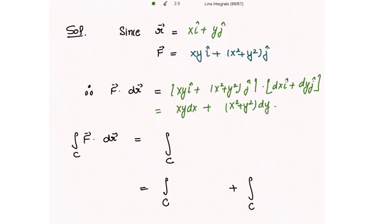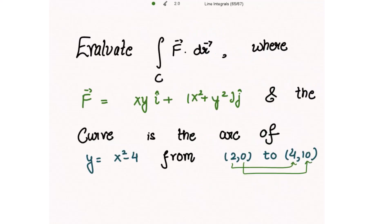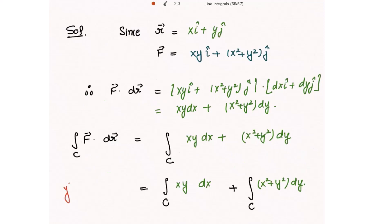The integral of F⃗·dr⃗ equals the integral of xy dx + (x²+y²) dy. We separate the integrals: the first is with respect to x and the second with respect to y. Since y = x² - 4, we use this equation to change the first integral entirely in x, and for the second integral we use x² = y + 4.